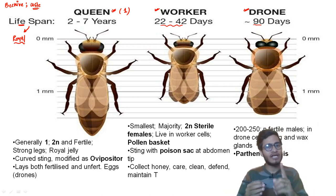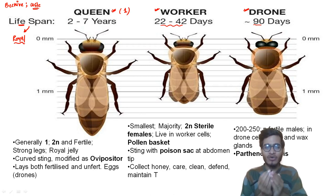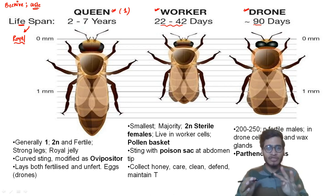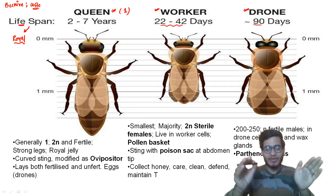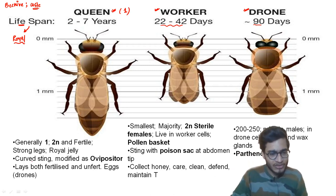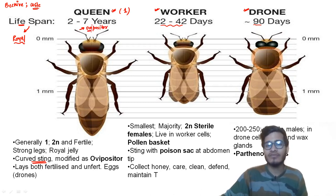The queen has several special features. First, her size is the biggest — she can be easily identified. Second, she feeds on royal jelly. Third, she has the maximum lifespan of around two to seven years, on average four to five years. Fourth, she has an egg-laying apparatus. Her stings are curved — these curved stings work as an ovipositor, which is the egg-laying apparatus.